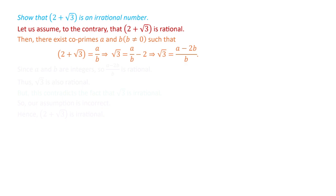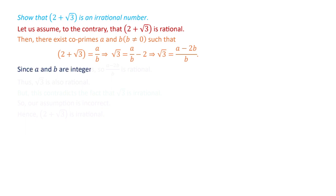Now, a and b are integers, so a minus 2b is an integer. Therefore, a minus 2b over b is in the form p by q where the denominator is not equal to 0. So this number we are obtaining is a rational number. Since a and b are integers, a minus 2b over b is a rational number.